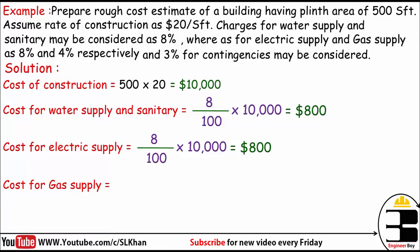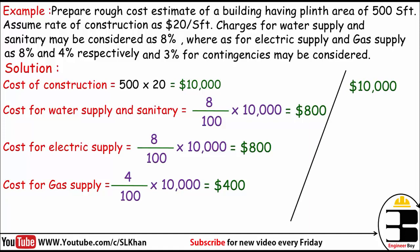Then comes the gas supply, which is only 4%. To remove the percent sign, we divide by 100. If it is 4 in 100, then how much should it be in $10,000? We get $400 as the cost of gas supply. Adding the cost of construction ($10,000), water supply and sanitary ($800), electric supply ($800), and gas supply ($400), the total equals $12,000.